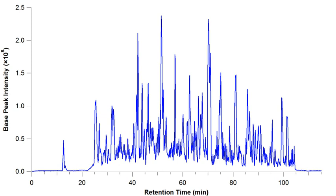In complex samples, the TIC chromatogram often provides limited information as multiple analytes elute simultaneously, obscuring individual species.